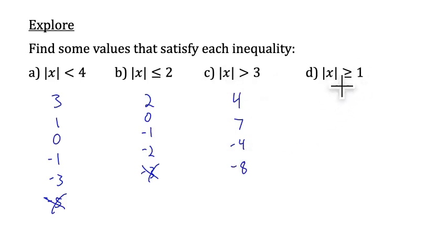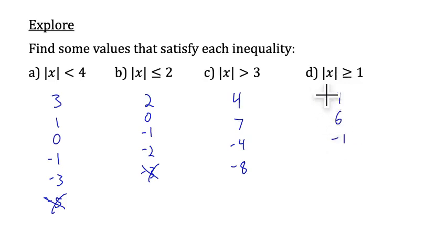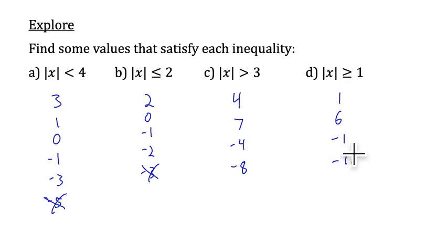Here, same thing — greater than or equal to 1. Same idea, but now we're going to include 1 and negative 1. Positive 1 is greater than or equal to 1. Positive 6 would be greater than or equal to 1. Negative 1 — the absolute value of negative 1 is positive 1, and that is greater than or equal to positive 1. And negative 10 — the absolute value of that is positive 10, which is greater than or equal to 1.